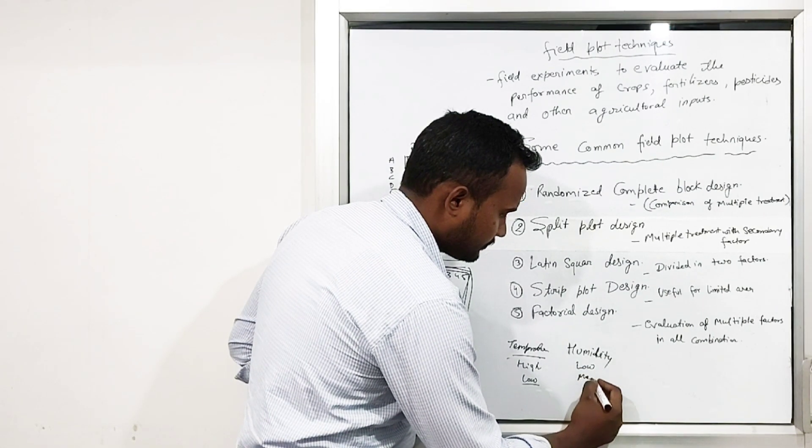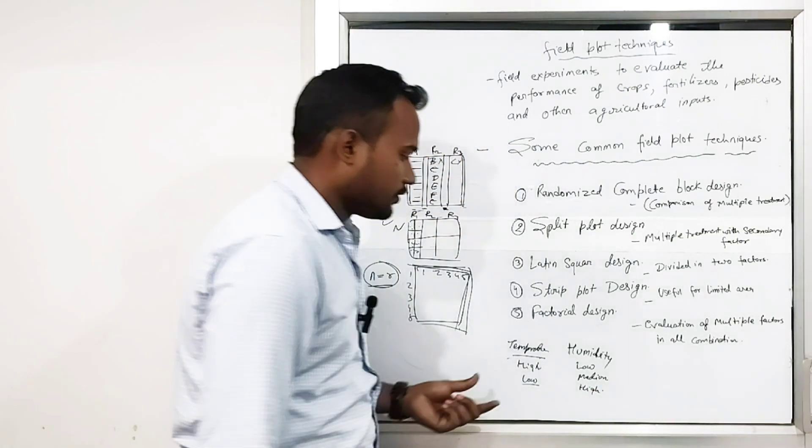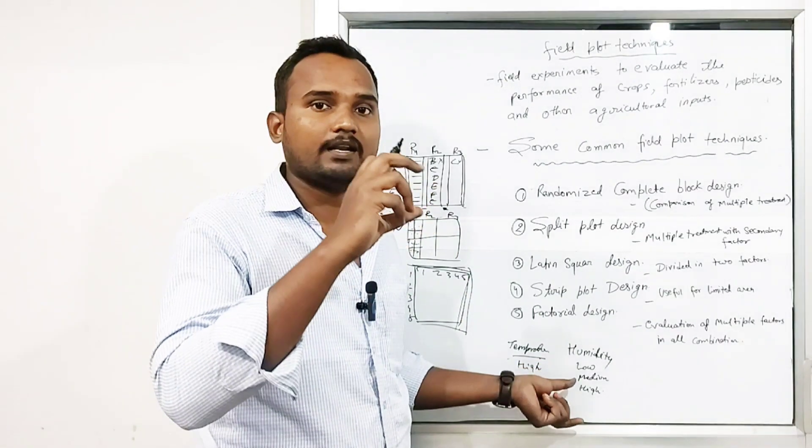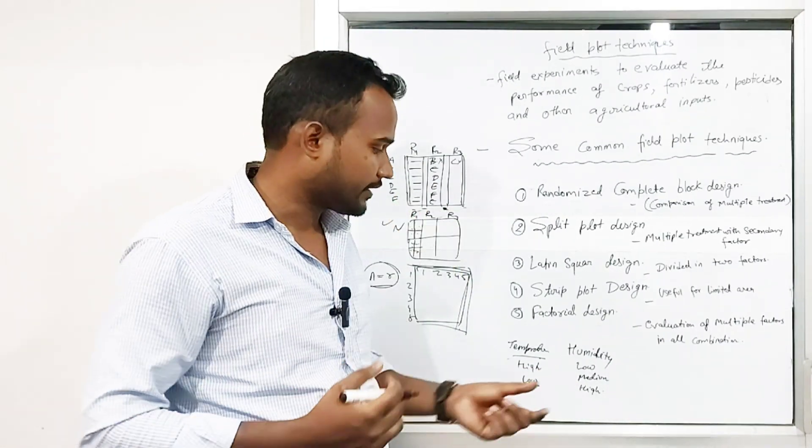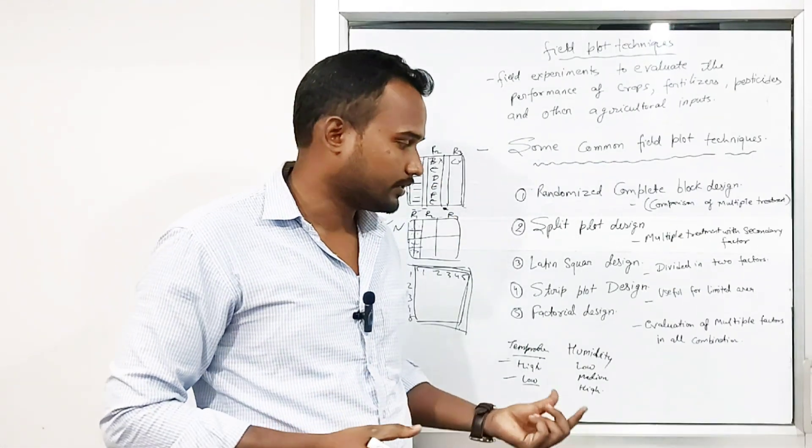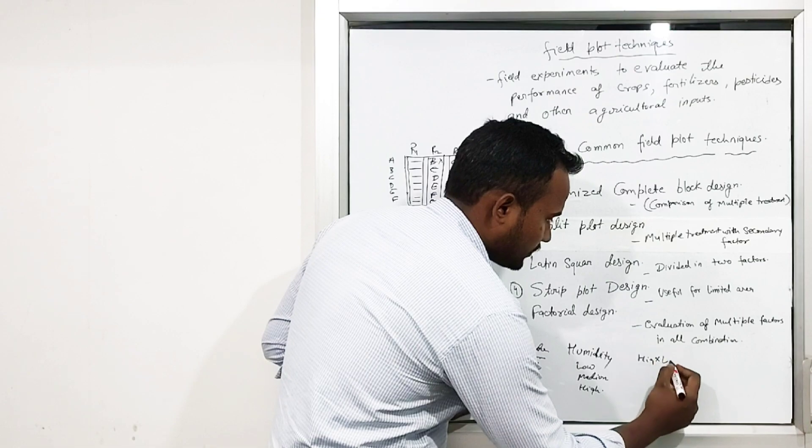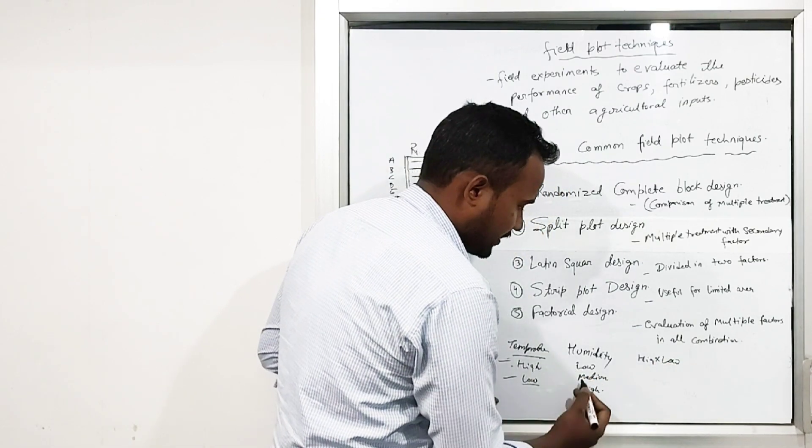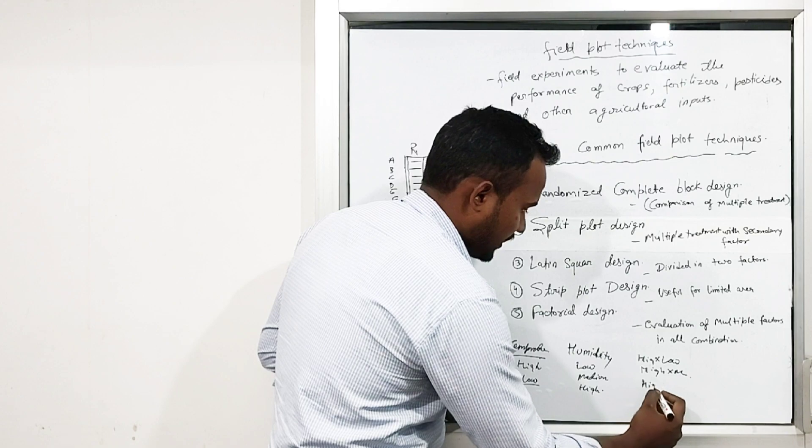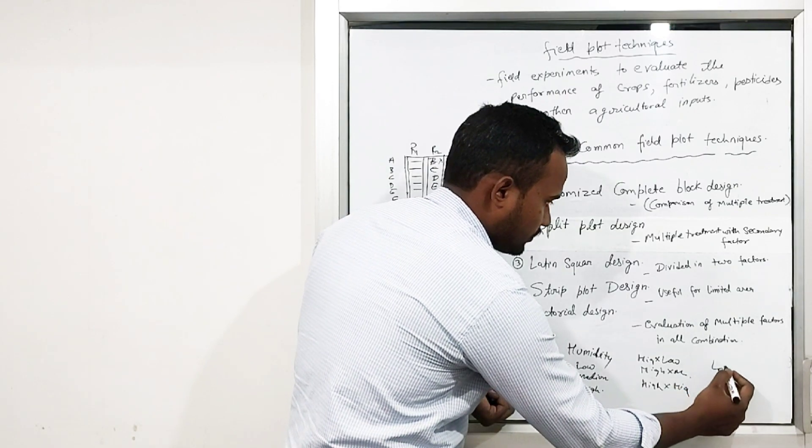So when both factors have different different levels of it, then we check all the possible combinations. High into low, okay, high into medium, high into high.